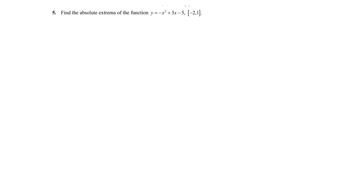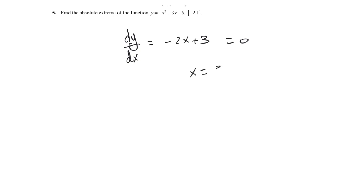Problem 5: find the absolute extrema of y = minus x squared plus 3x minus 5. Since this is a polynomial, the derivative always exists, so dy/dx = minus 2x plus 3. Setting this to zero gives minus 2x equals minus 3, or x equals 3/2. At x equals 3/2, there is a horizontal tangent and it is a candidate for the maximum value.